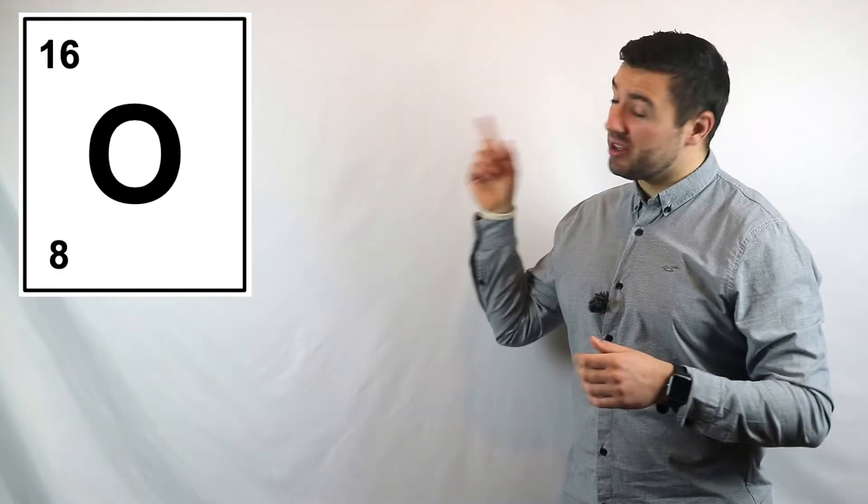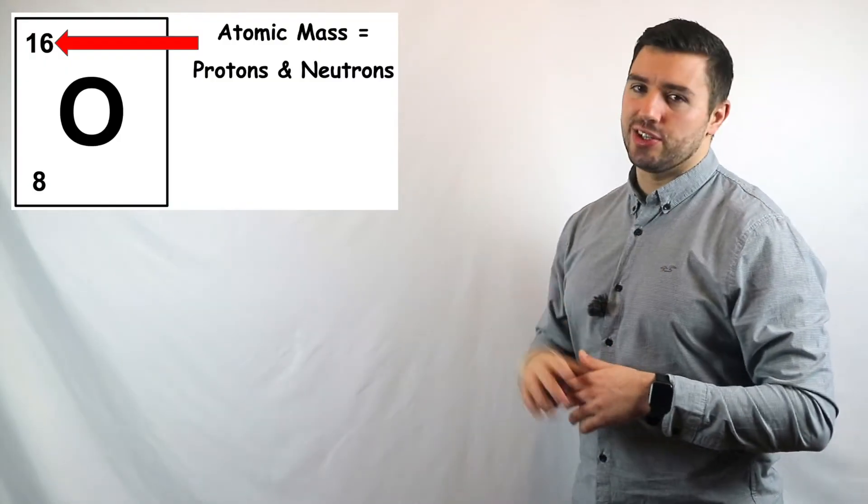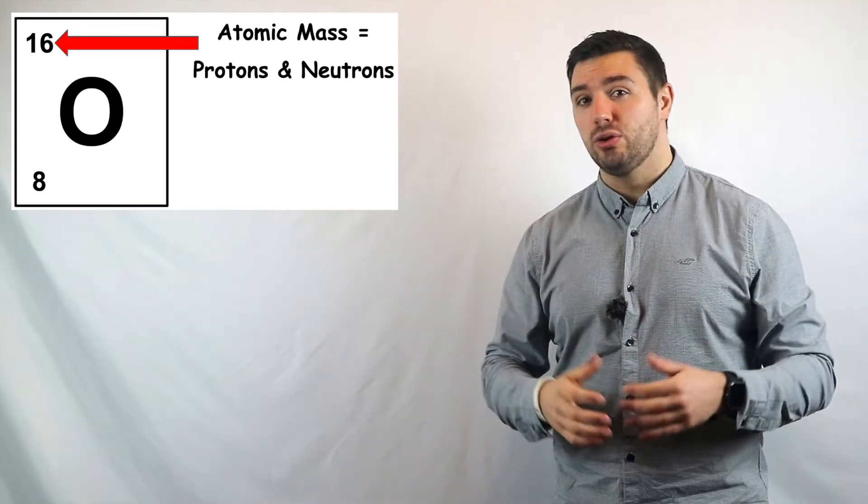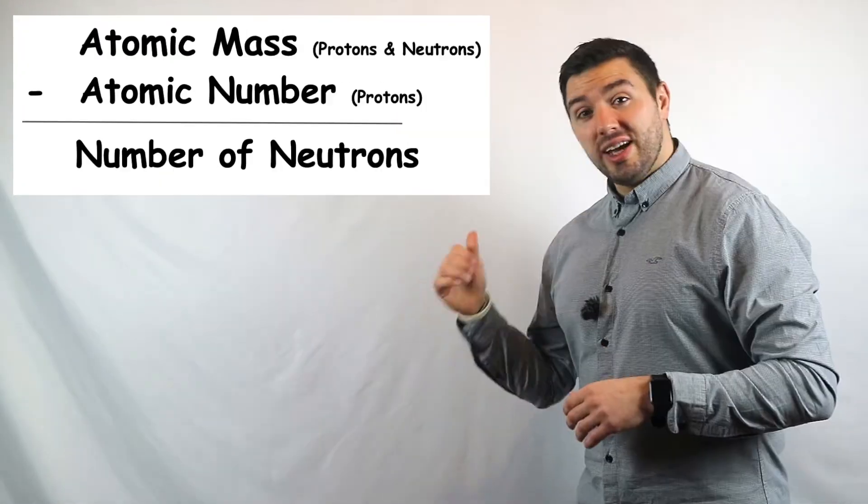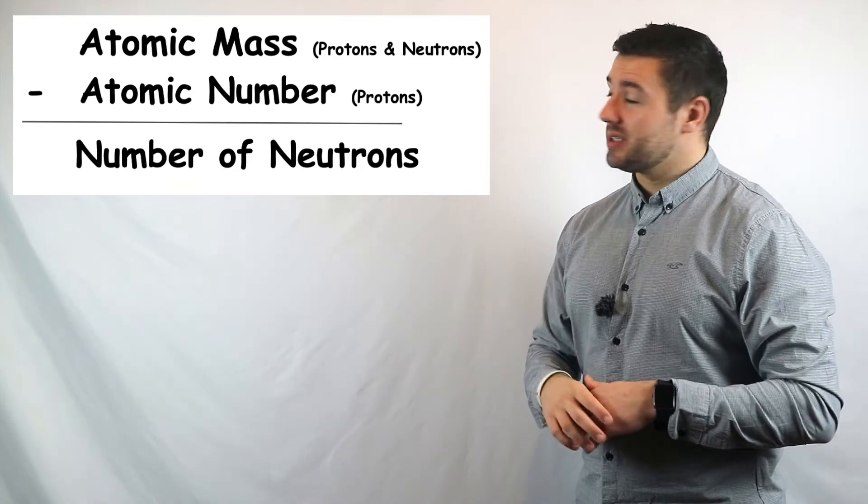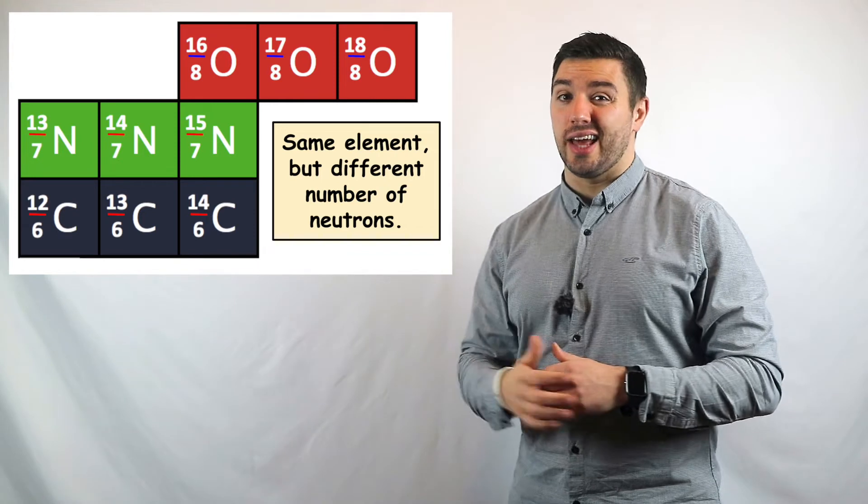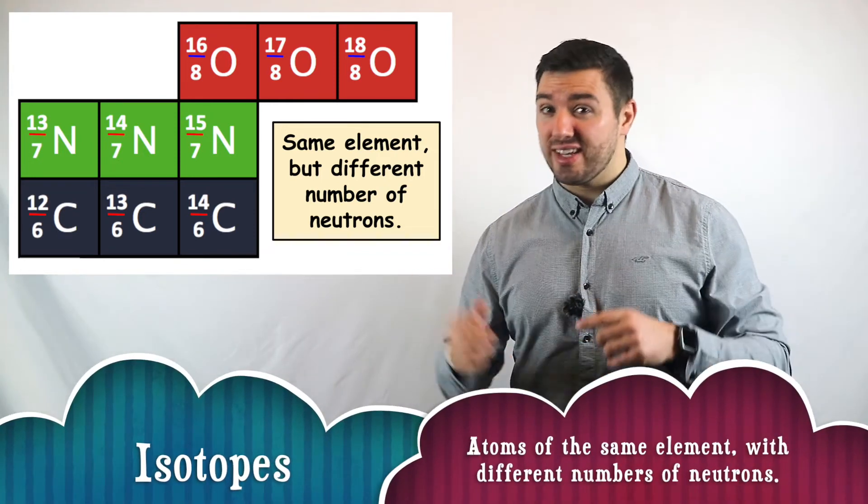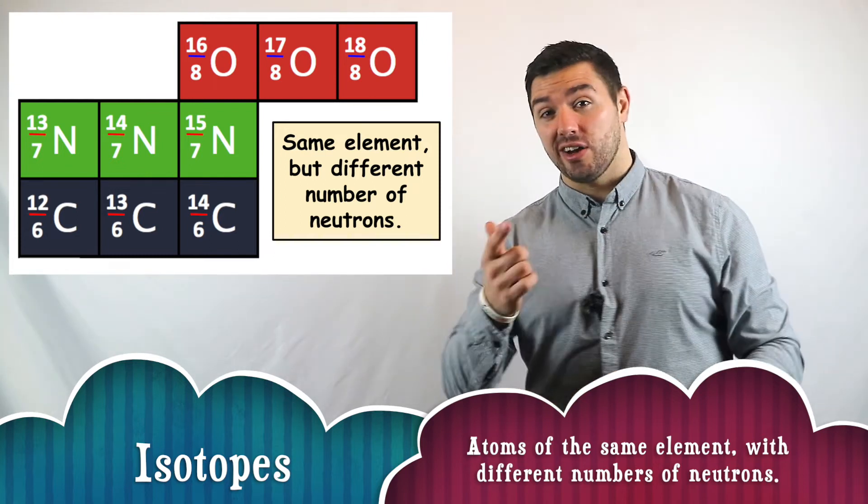My second bonus tip is using those numbers to be able to calculate the number of neutrons, something they love to bring up in the exam. So if we look at that atomic mass number, which is the bigger number on the element, it tells you how many protons and neutrons there are in that nucleus. Now if we take away the smaller number, which is the number of protons, it's going to leave us with the number of neutrons. And that's how you find out the number of neutrons as well. It's really important to remember that the number of neutrons in an element doesn't necessarily have to stay the same. There could be different variations of that same element that has different numbers of neutrons. We call those isotopes, and I'll cover them in my next video.